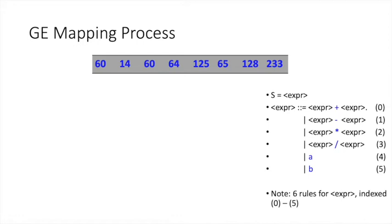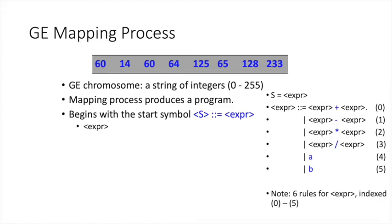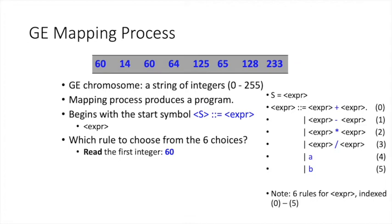The translation process is called a mapping process in GE. This mapping process begins by looking at the start of the grammar. The grammar has a start symbol, which in this case is the non-terminal expra. For this non-terminal, we have six rules to choose from. That's where the GE chromosome guides us — we read the first integer from the chromosome, which is 60. But we only have six rules to choose from, so we must convert 60 into a valid rule index using the remainder operator, or mod operator.